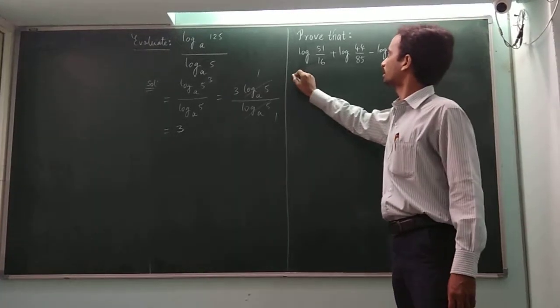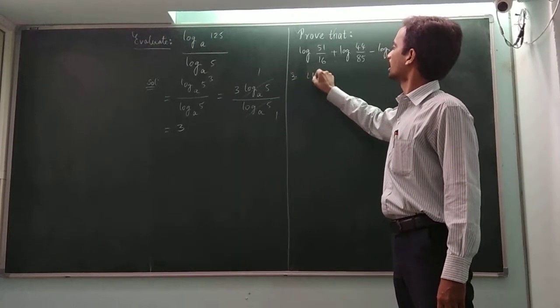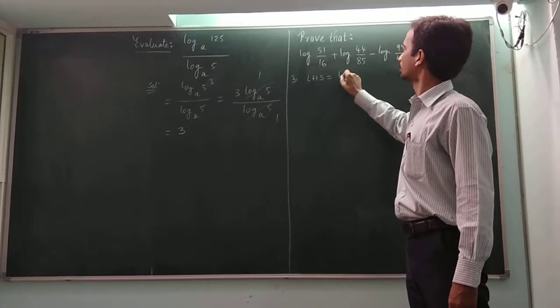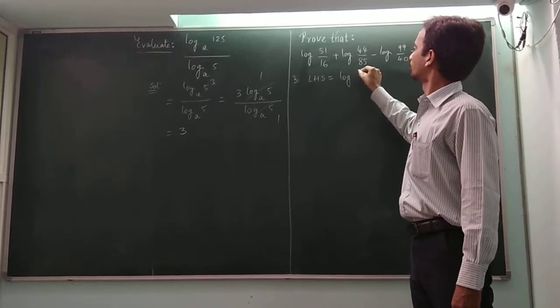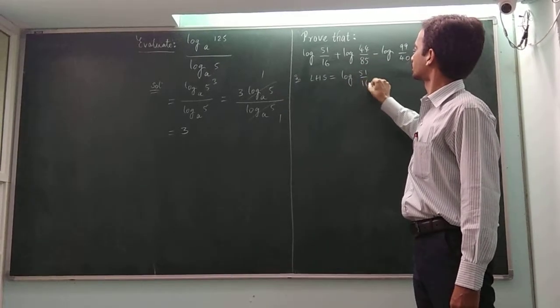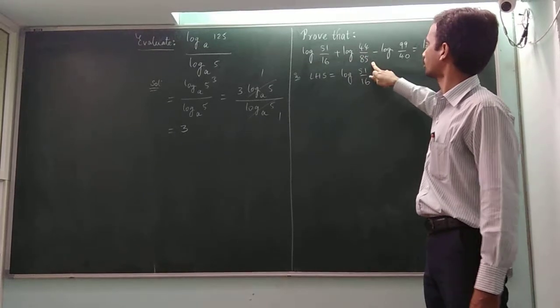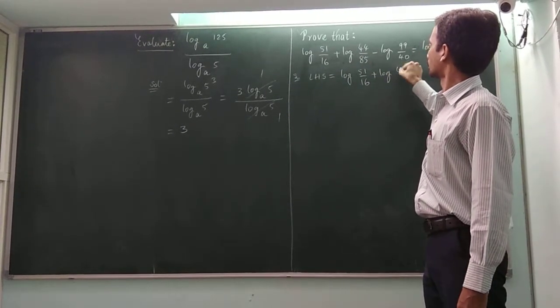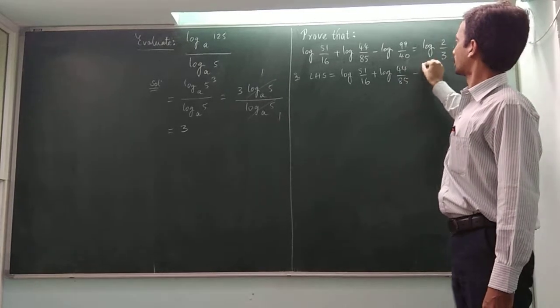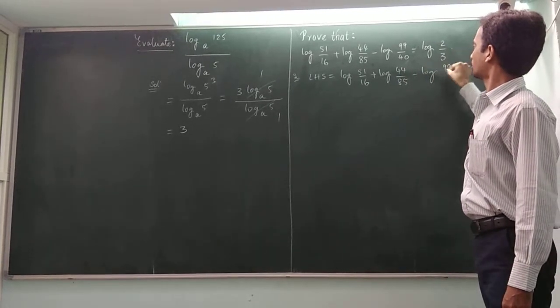So at first let us take the LHS part. LHS part is equal to log 51 by 16 plus log 44 by 85 minus log 99 by 40.